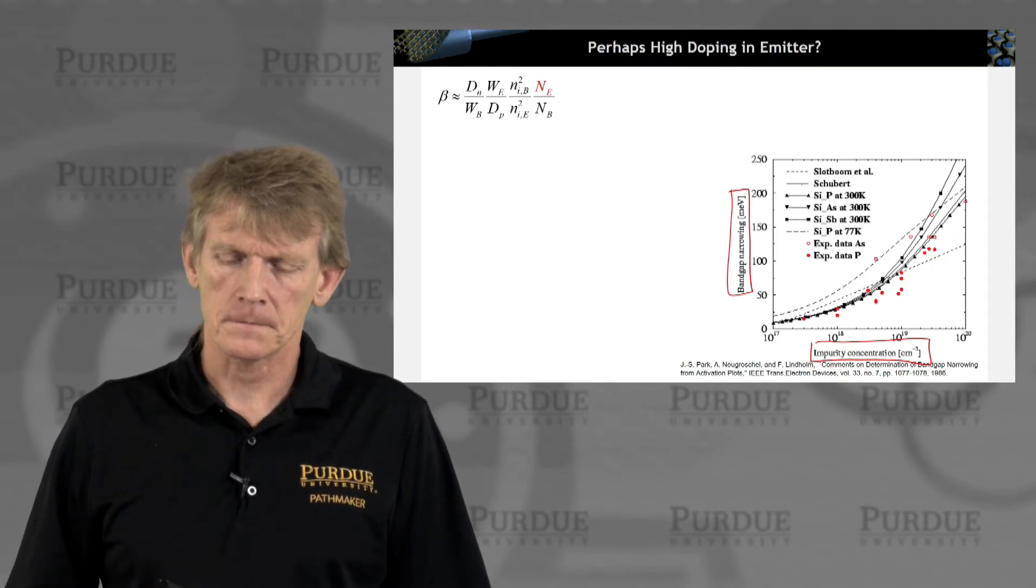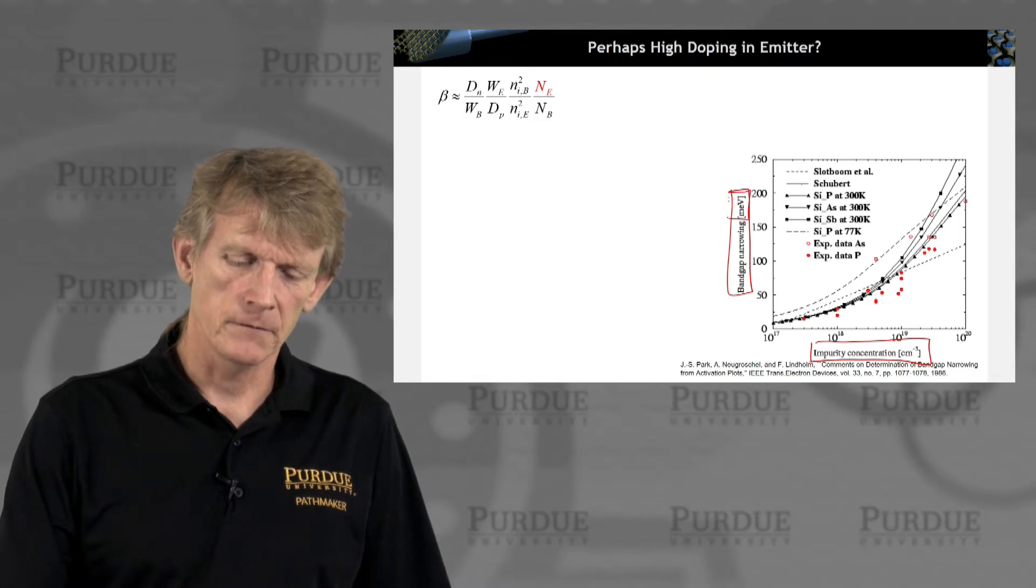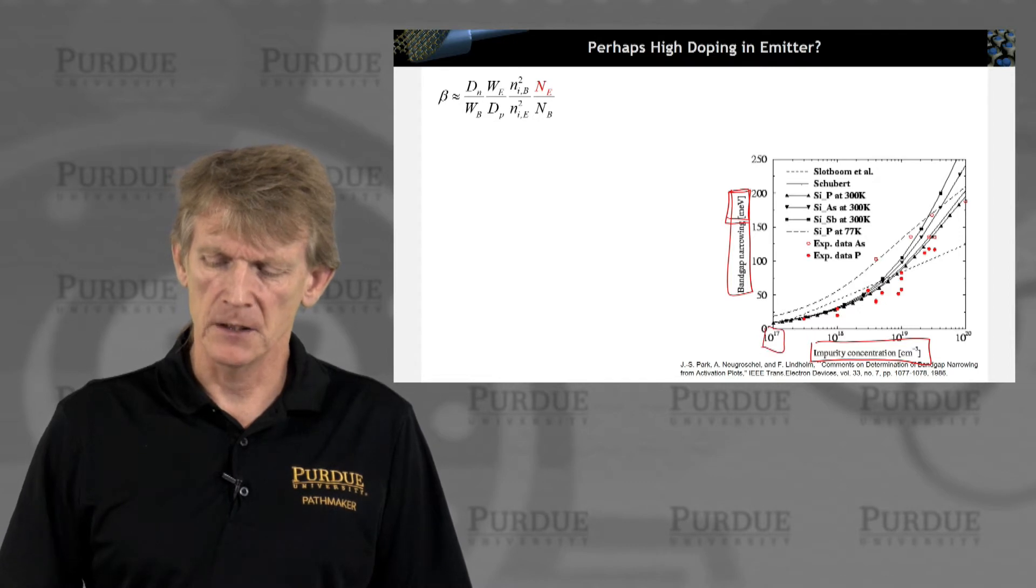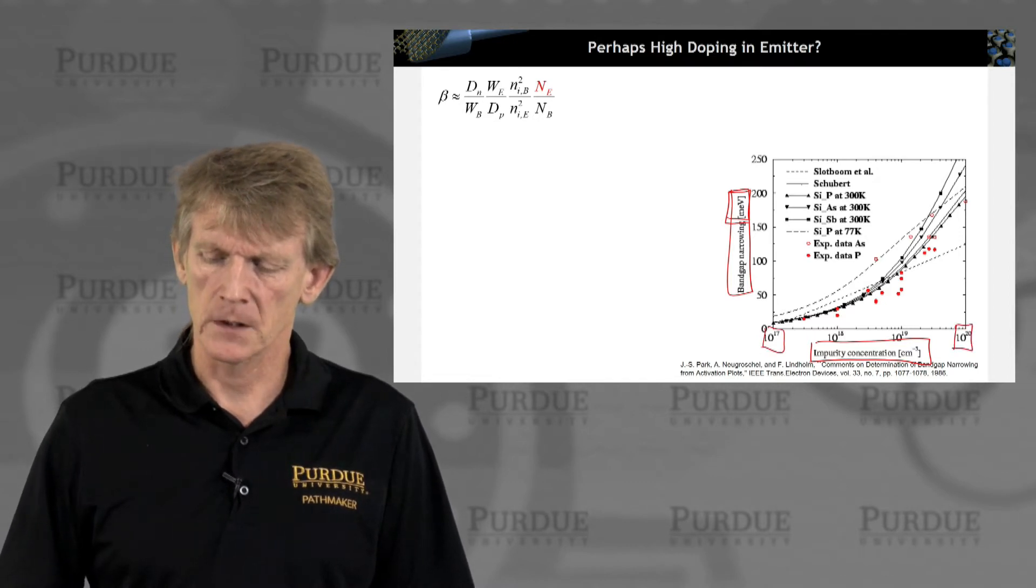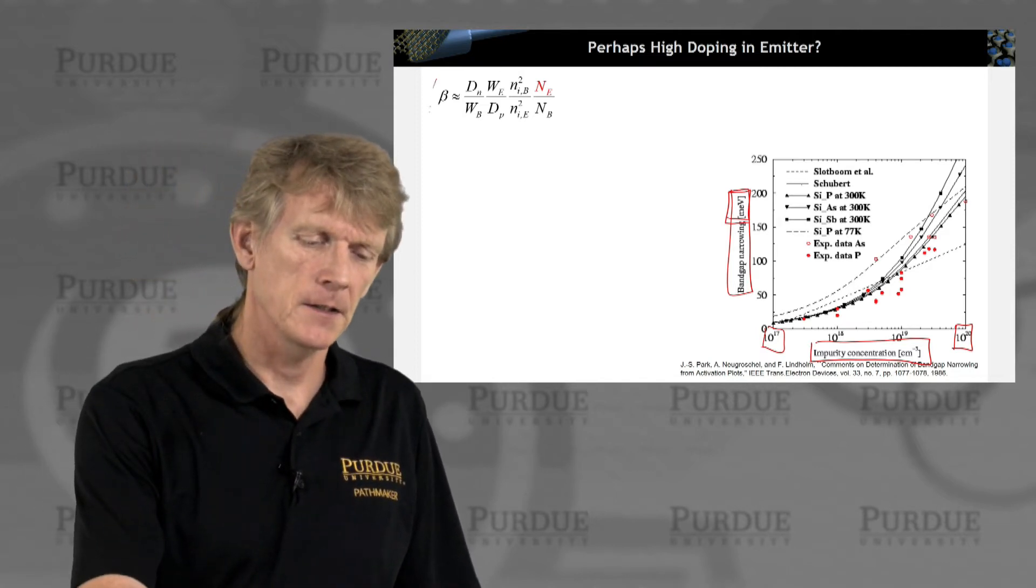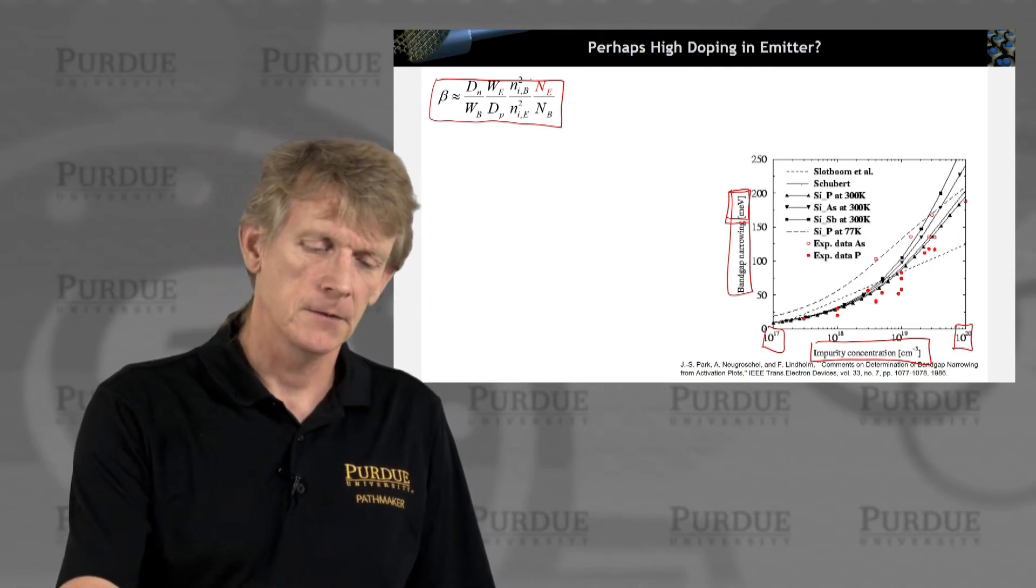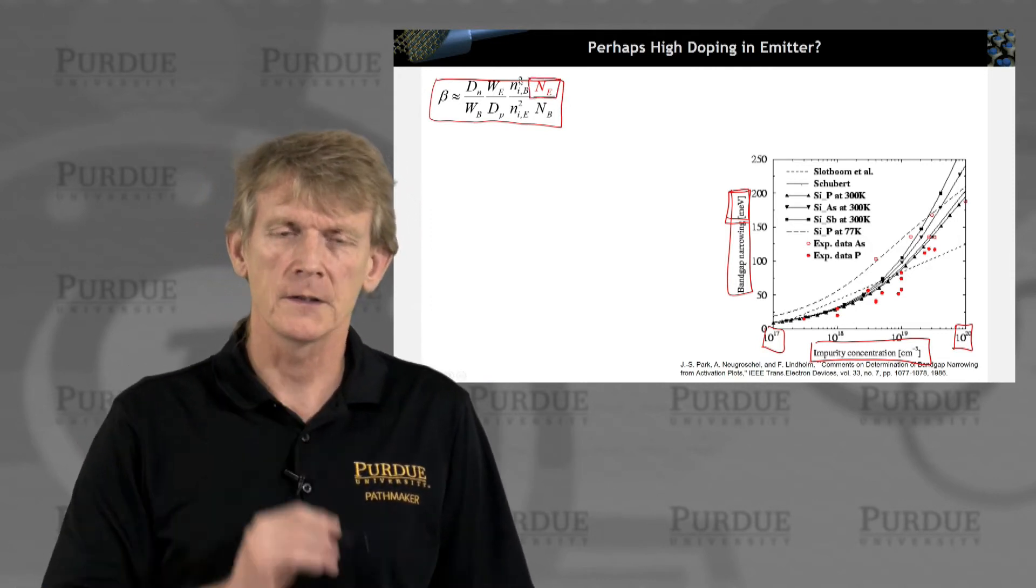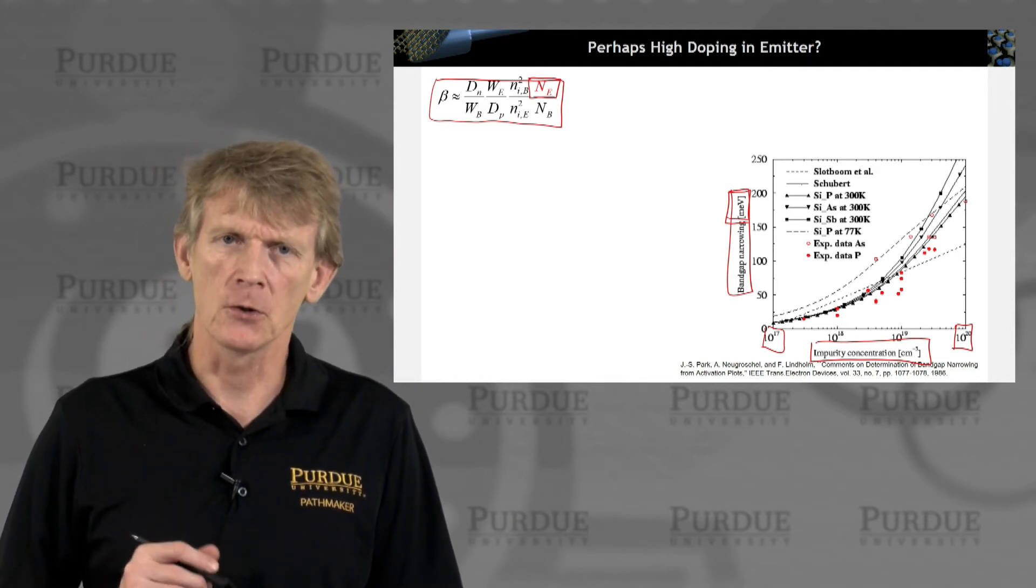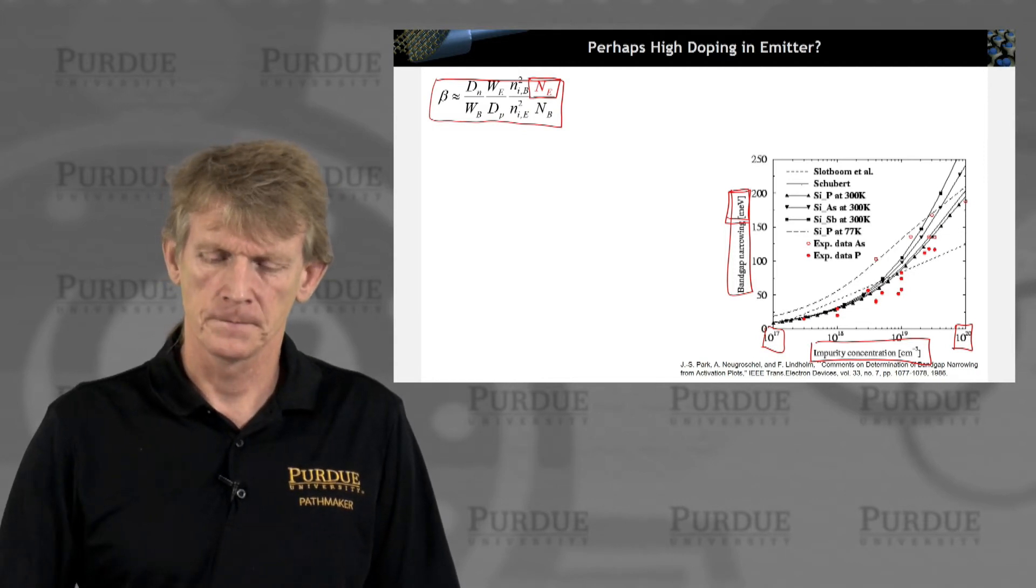Now let's look at the scales. This is millielectron volt, and the doping ranges from 10 to the 17 to 10 to the 20. So let's say we start out from this nice expression for beta here, and we're going to start exploring what we can do with the emitter doping. So let's ramp up the doping some in order to ramp up beta.